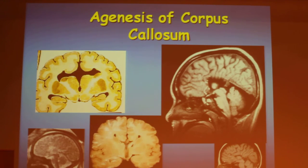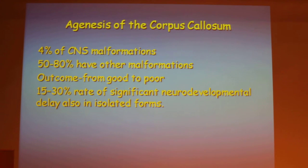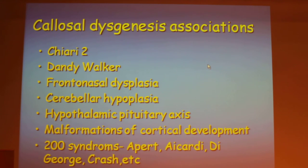Commissural abnormalities — the most common one is agenesis of the corpus callosum. It accounts for 4% of all seen malformations, and 50 to 80% have other associated malformations. Outcome can range from good to poor, depending on associated findings. The associations are various.